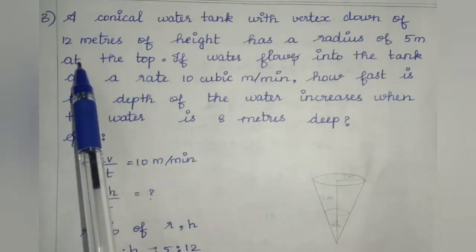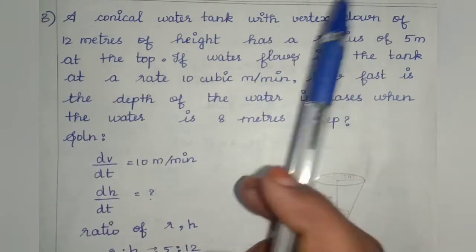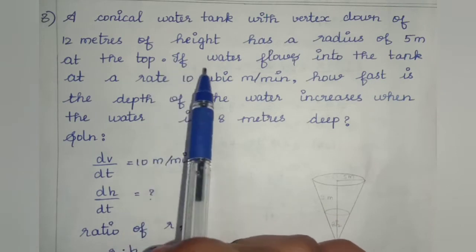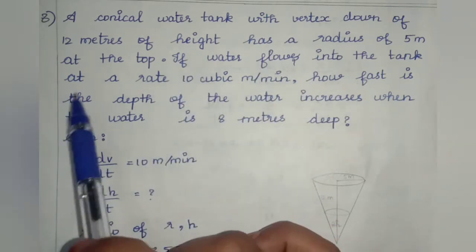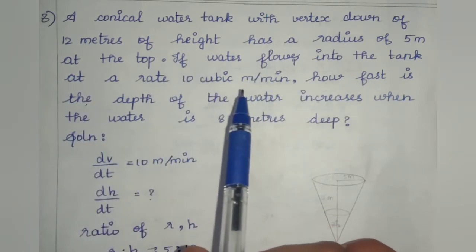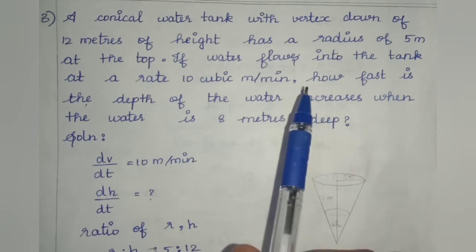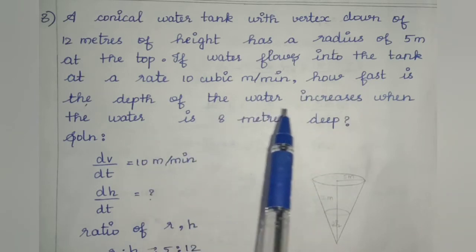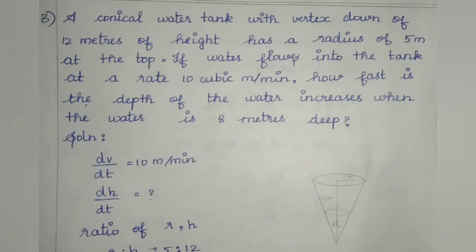A conical water tank with vertex down, 12 meters in height, has a radius of 5 meters at the top. Water flows into the tank at a rate of 10 cubic meters per minute. How fast is the depth of the water increasing when the water is 8 meters deep? Now let's solve.